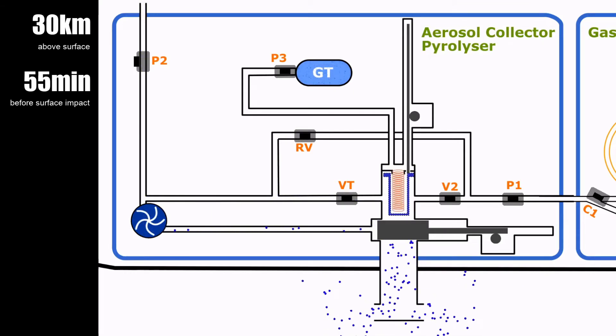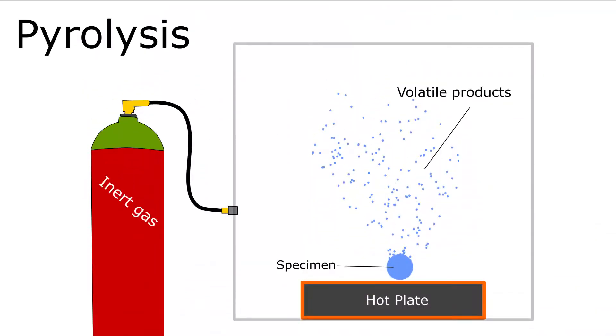The oven is turned on and heated to 250, then 600 degrees Celsius, allowing pyrolysis to occur in the aerosol sample collected by the collection filter. Pyrolysis is the process of decomposing a material by raising its temperature inside an inert atmosphere. The inert atmosphere prevents unwanted chemical reactions from occurring during decomposition.